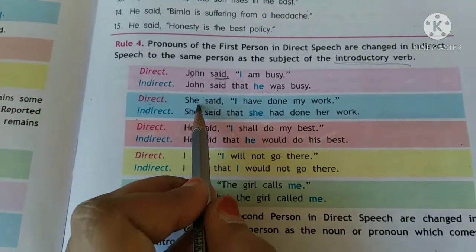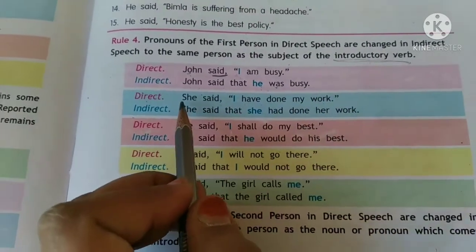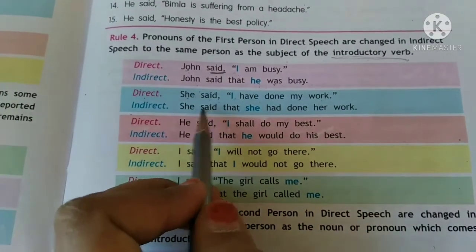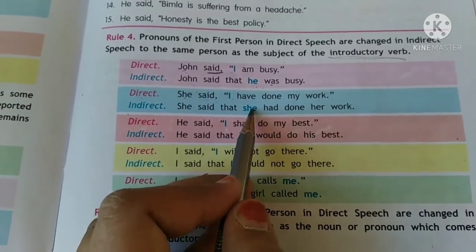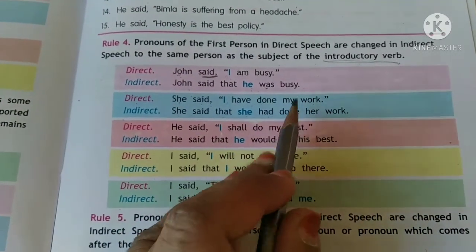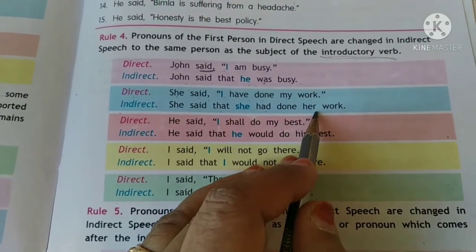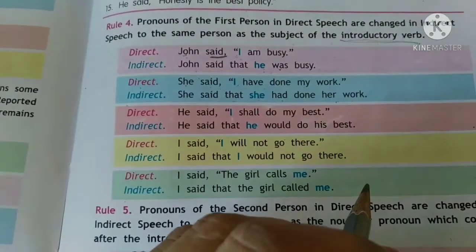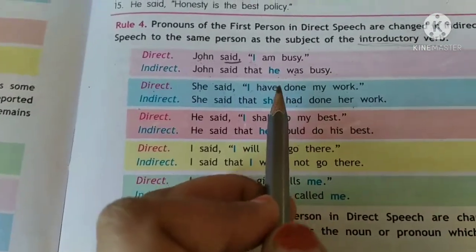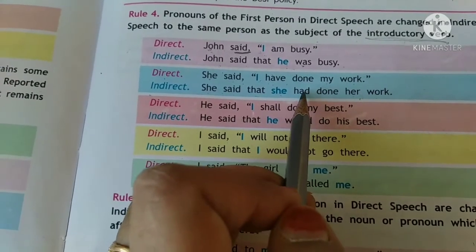The next example: she said, 'I have done my work.' So she is saying 'I' — who is that 'I'? It means she. So in the indirect, 'I' will become 'she' again. So: she said that she — 'have' will become 'had' — done her work. 'My work' becomes 'her work'. This was in the present perfect, so it changed into the past perfect: had done.